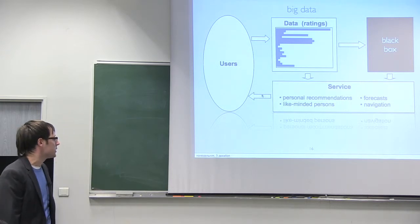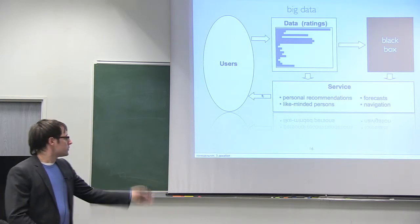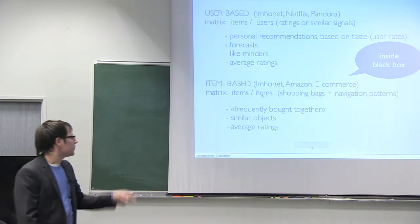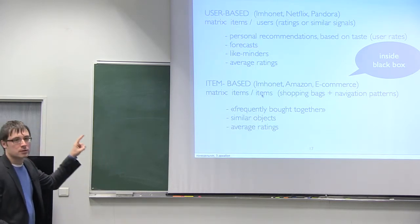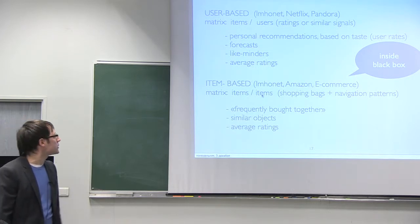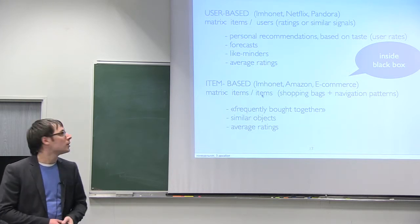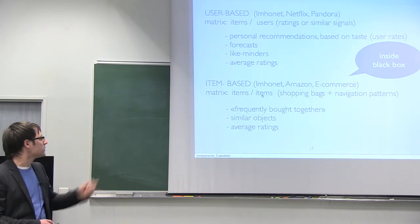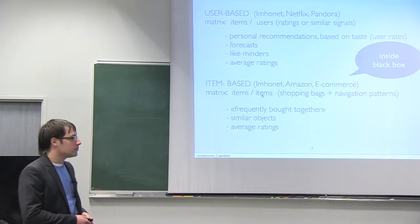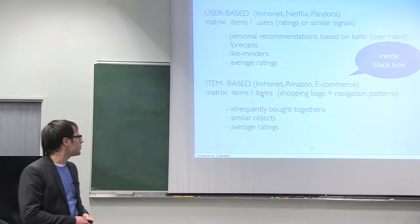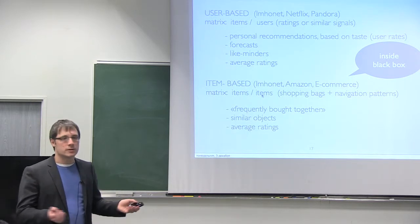Personal recommendations, forecasts, like-minded persons, navigation, and stuff. Inside the black box, there are two different types of technologies. Number one is user-based, used by Netflix and Pandora. It's based on metrics item to users, meaning user rates and similar signals. It can provide the most precise personal recommendations based on user tastes. It also provides forecasts, like-minded monitors, and different ratings systems.